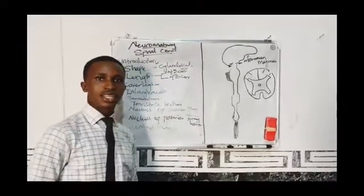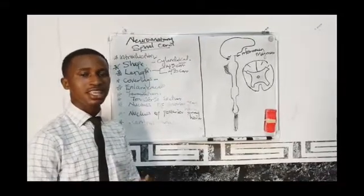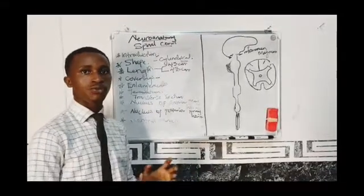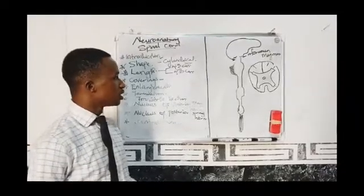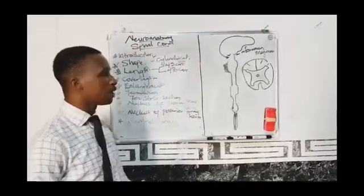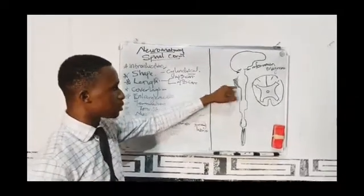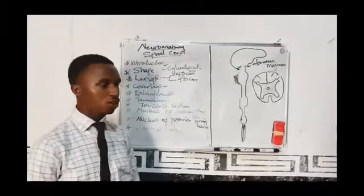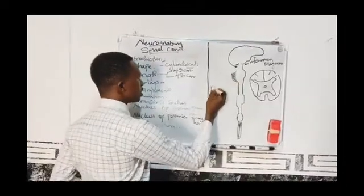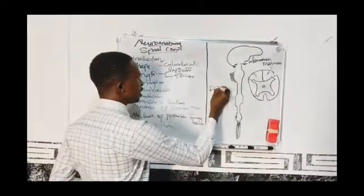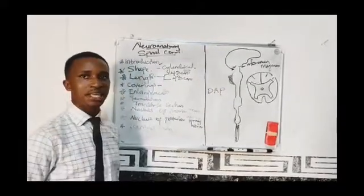The spinal cord is very delicate and as such it needs important coverings that offer protection and other important functions. The spinal cord is covered by what we refer to as the meninges. The meninges is made up of three layers. From external to internal, the meninges has three layers — you can remember by the mnemonic DAP.